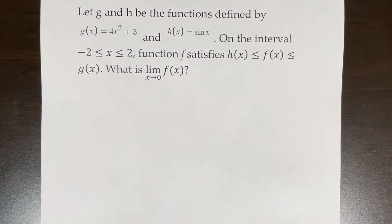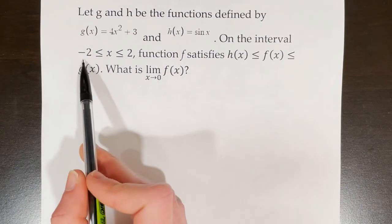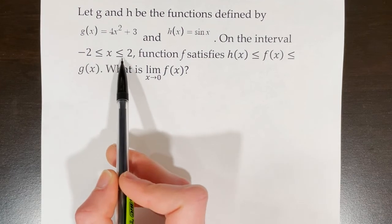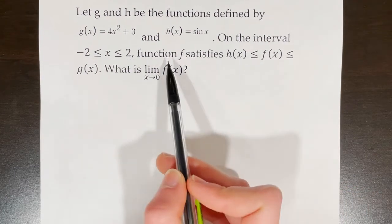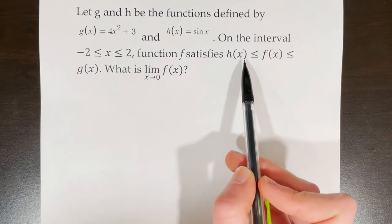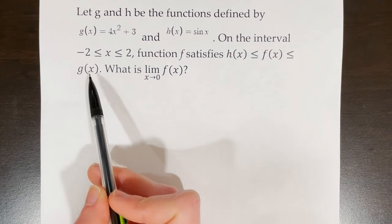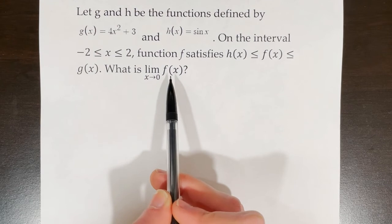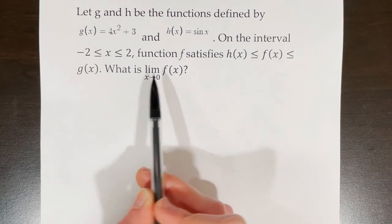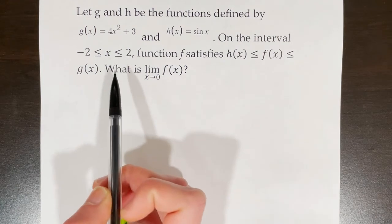Here we have a very similar example but with slightly different functions. This time our inequality is only on the interval −2 ≤ x ≤ 2. Only when that is true does function f satisfy the inequality h(x) ≤ f(x) ≤ g(x). We're asked to find the limit as x→0 of f(x). Because 0 is within the range of −2 to 2, we can use the squeeze theorem in this situation.